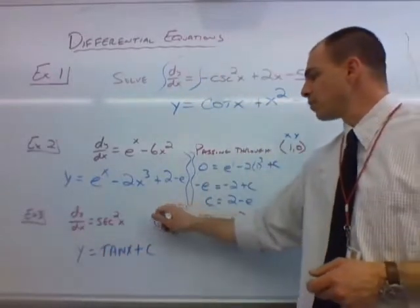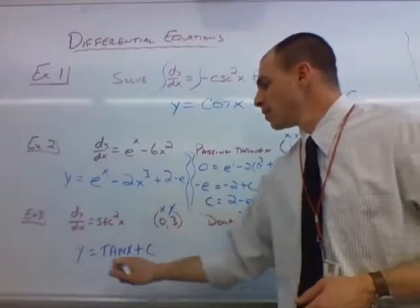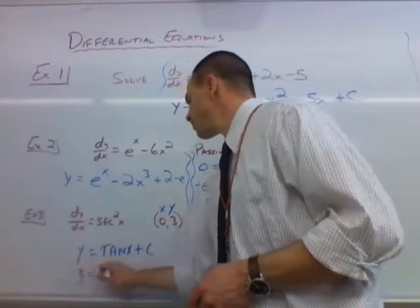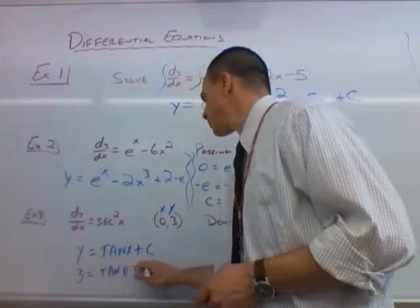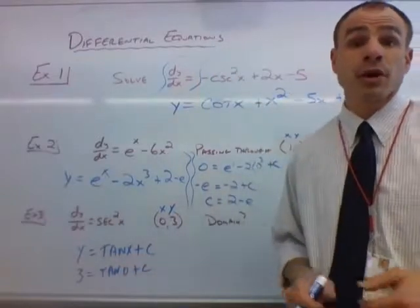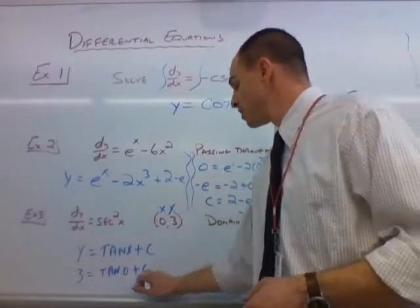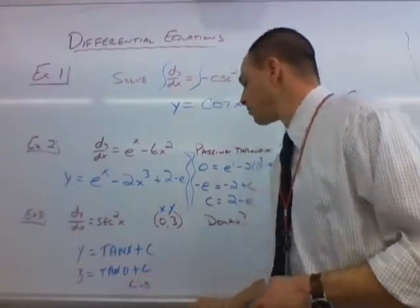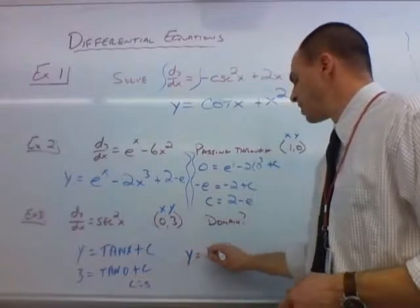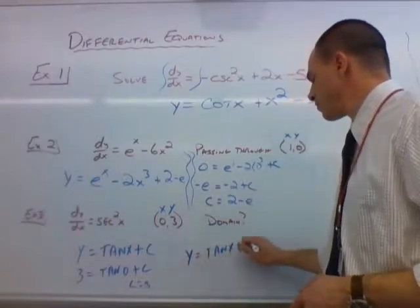When x is 0, y is 3. So 3 is equal to the tangent of 0 plus c. We have to know our trig chart. We have to know the value of tangent at 0. Tangent of 0 is 0. So that means that c is equal to 3. So now we have y equals the tangent of x plus 3.